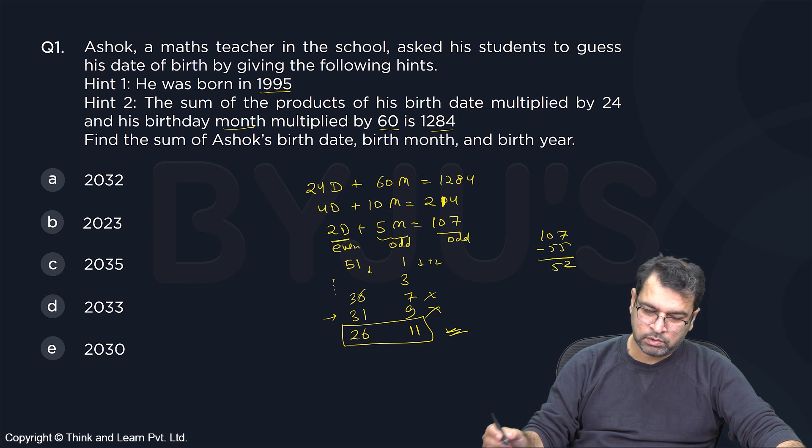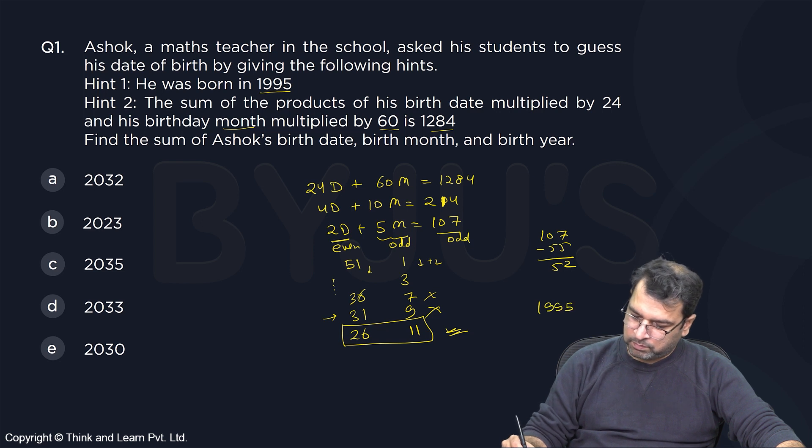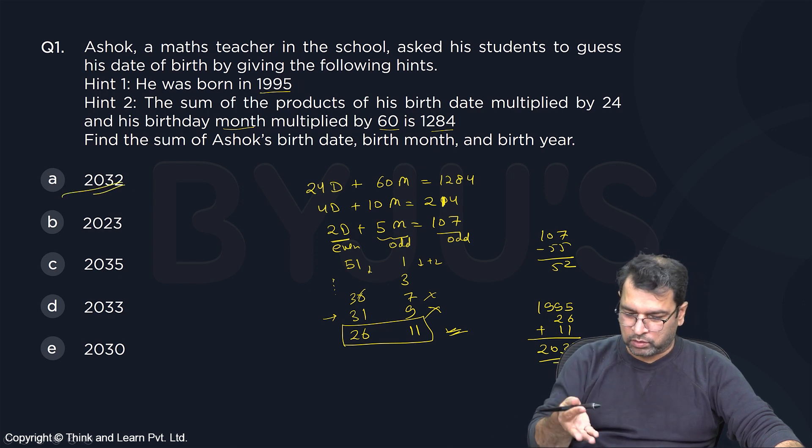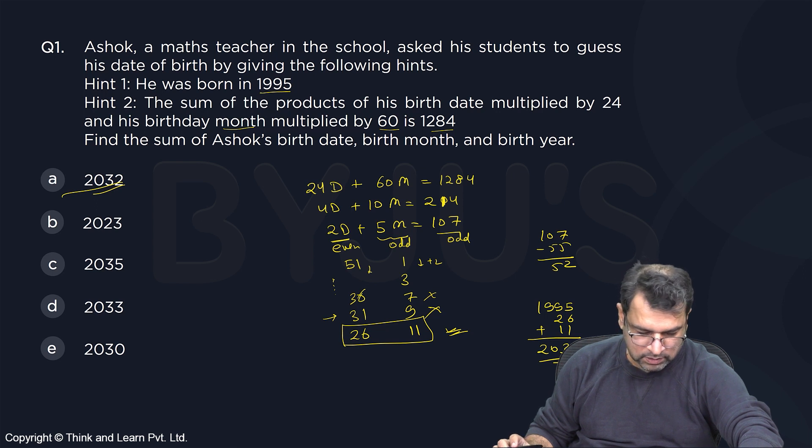So what is the question asking? Sum of the birth date, year and month. So we need to add 1995 plus 26 plus 11. That will be your answer. And that will be 2032. I solved it in this slide only. The answer is clear. Answer is 2032.